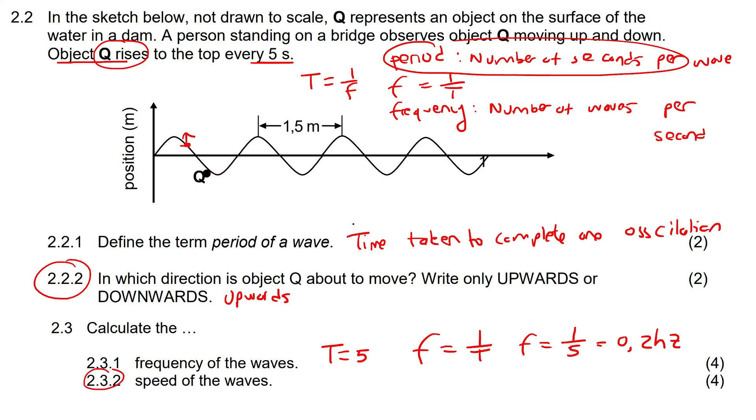And then this one says calculate the speed. Well, we know that there's this formula that we can use, we now have the frequency from the previous question. This is wave length, we can see that they've given us the wave length over here. So that's 1.5. So then we can just say 0.2 multiplied by 1.5, and that will give us 0.3 meters per second.